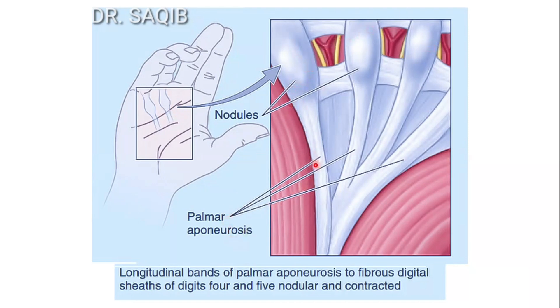This is the palmar aponeurosis. These very important nodules — yes, here you could see the nodules as well, and they are enlarged over here.